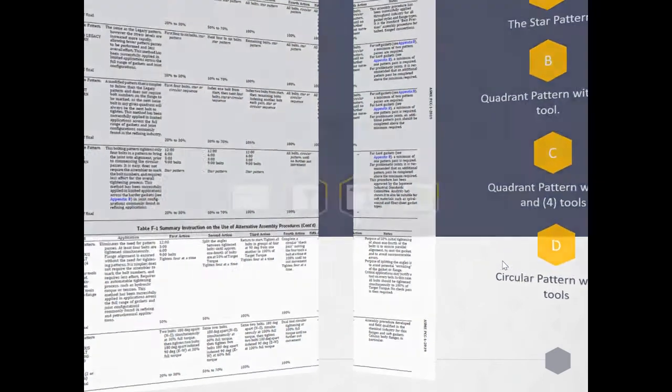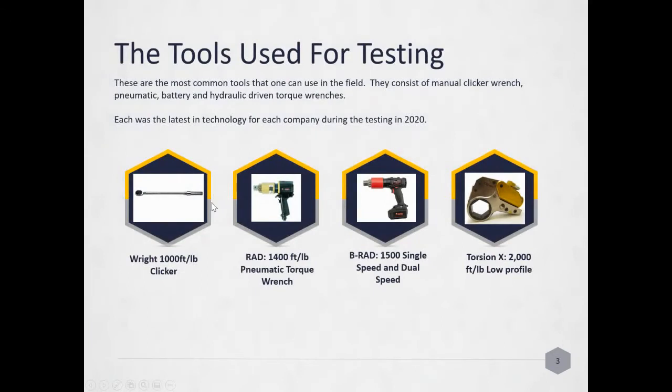The tools we were going to look into was a 1,000-foot-pound clicker wrench. We were using a RAD 1400, that's 1,400-foot-pounds of torque. It's a pneumatic torque wrench. And then the B-RAD 15 single speed and dual speed. Then we used the Torgen X low-profile tool that goes to 2,000-foot-pounds.